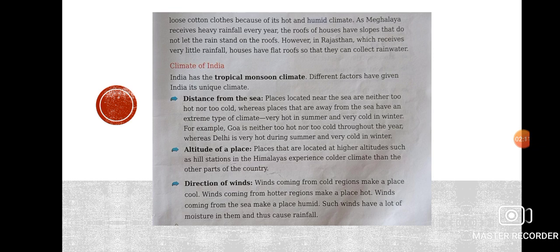The second point is altitude of a place. Altitude means height — the height of a place. Places that are located at higher altitudes, such as hill stations in the Himalayas, experience a colder climate than the other parts of the country. Places that are at a high height or elevated place experience a cold climate.